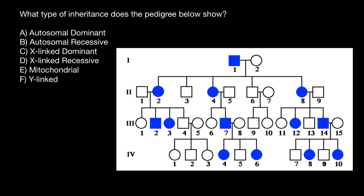So what type of inheritance is it? We can explain it with X-linked dominant genetic disorder. Let's use red color to specify the defective X chromosome. So this male has the defective X chromosome, and green color specifies the normal chromosome, along with the normal Y chromosome.